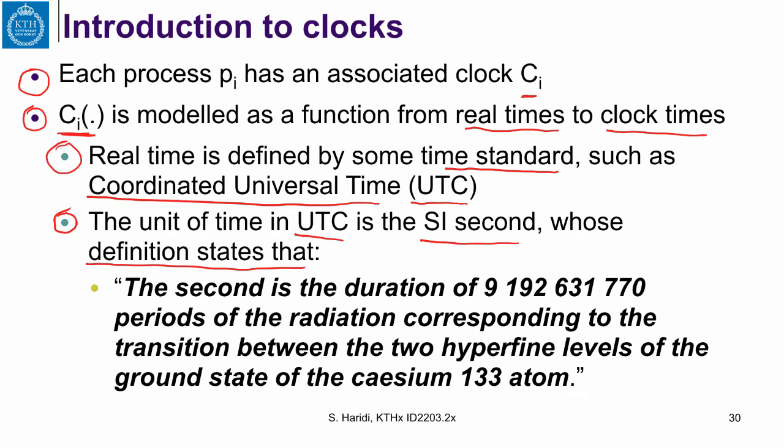Here is the definition of the SI second: the second is the duration of 9,192,631,770 periods of the radiation corresponding to the transition between the two hyperfine levels of the ground state of the cesium-133 atom. You don't need to understand the physics — what you need to know is that there is an absolute time standard based on the number of transitions in the cesium atom, giving us what we agree upon as a standard second.